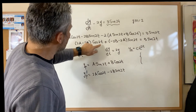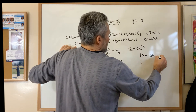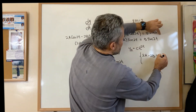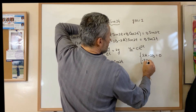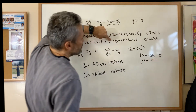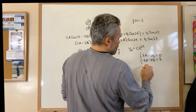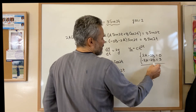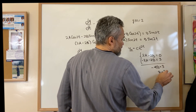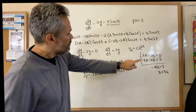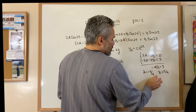From here we get the following system for a and b. If we compare, the coefficient of cosine of 2t on the left is 2a minus 2b, and on the right is 0. The coefficient of sine of 2t on the left is negative 2a minus 2b, and on the right is 3. We solve the system by adding the two equations, and we get negative 4b equal to 3, meaning b is negative 3 over 4. From here we get that a equals b, and therefore a is also negative 3 over 4.